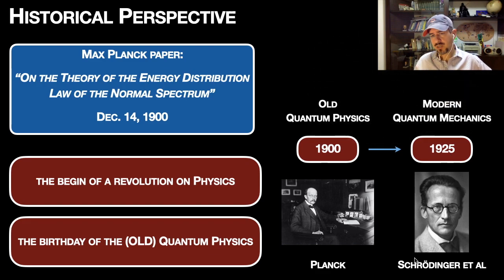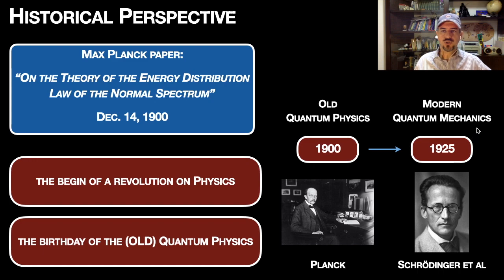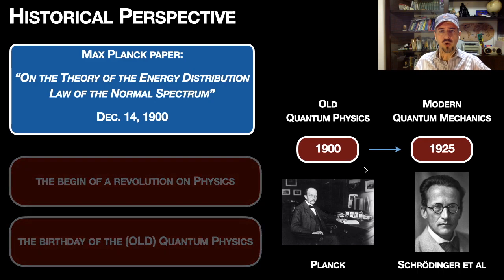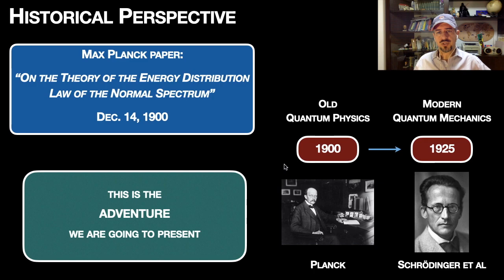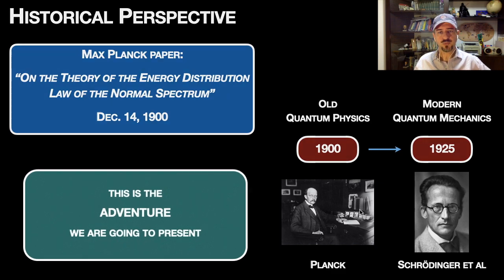What we call old quantum physics starts in 1900, and in 1925–26 Schrödinger, Heisenberg, Dirac, and many others, with their contributions, gave us modern quantum mechanics. So over about 25–26 years, we went from the beginning of quantum physics to the development of modern quantum mechanics. This adventure — this history — is what we are going to present now.